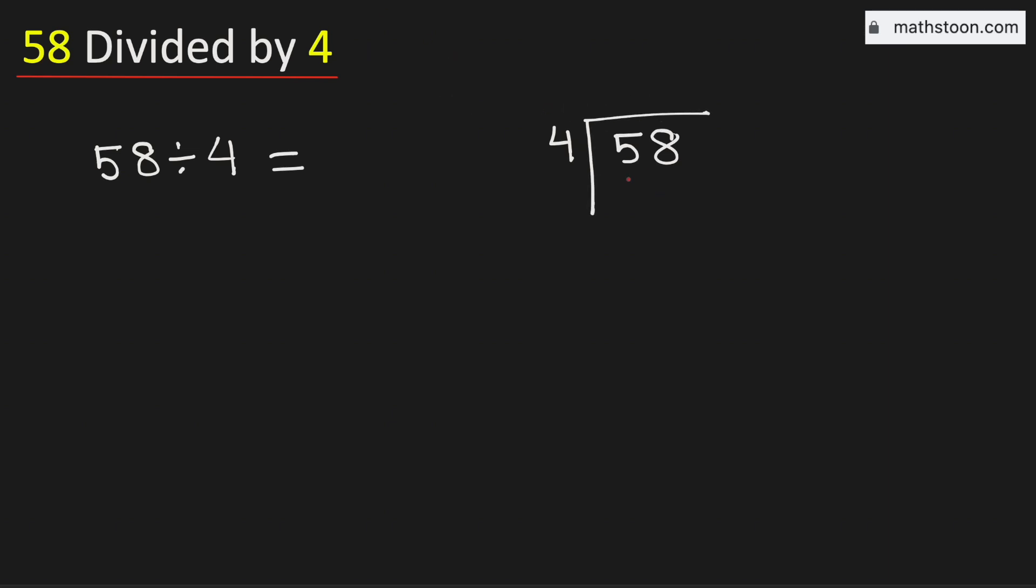We see that 5 is less than 4, so we will consider the number 5. We know that 4 times 1 is 4. Subtract, we get 1. Now 1 is less than 4, that is why we will bring down this number 8 here.